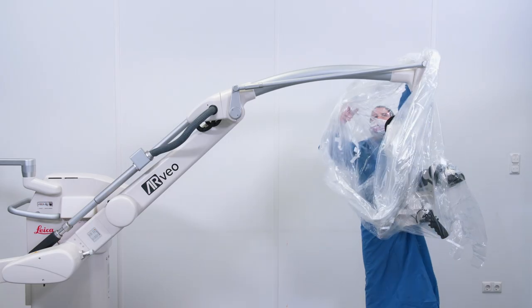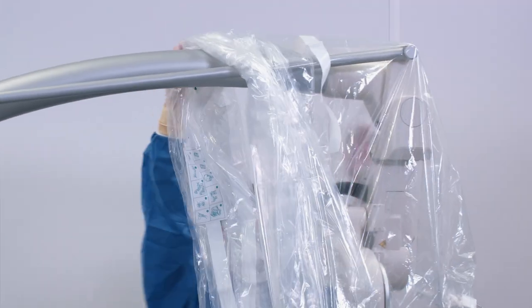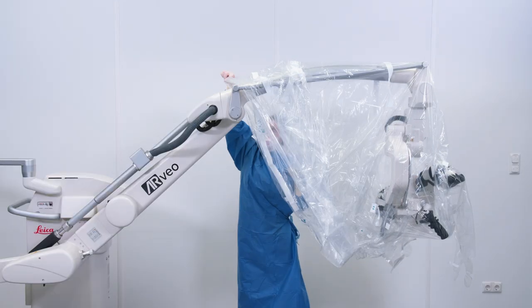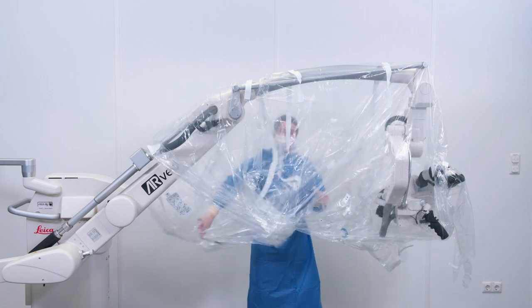Move the drape over the microscope head and pull it over the rest of the arm. Your circulator can assist you, pulling the drape from inside over the microscope arm and wrapping the last band.